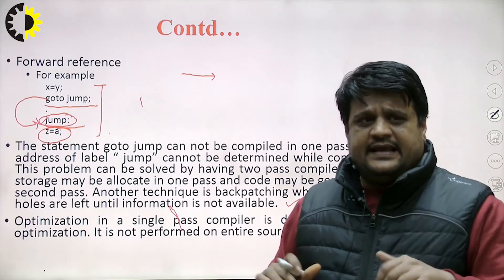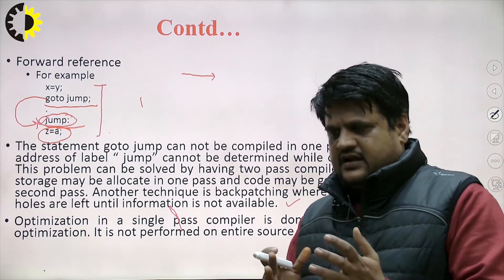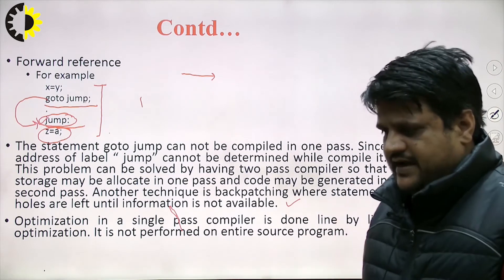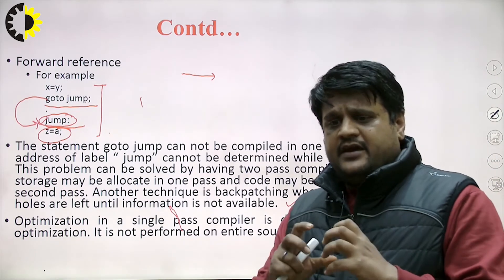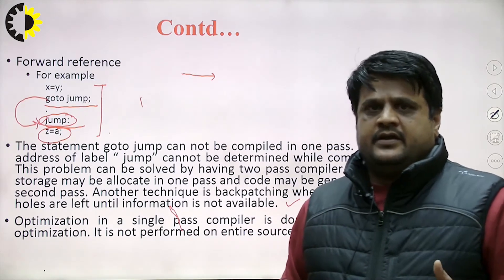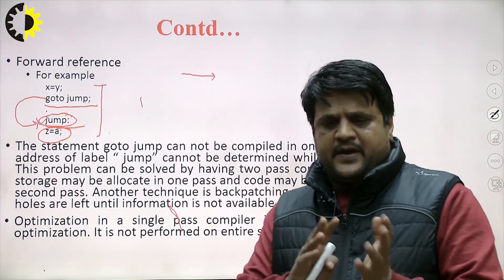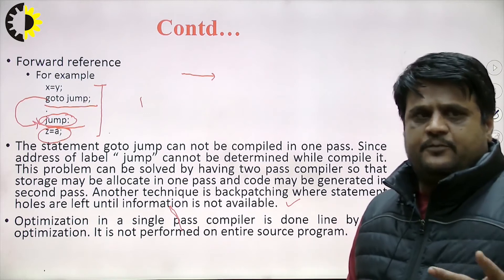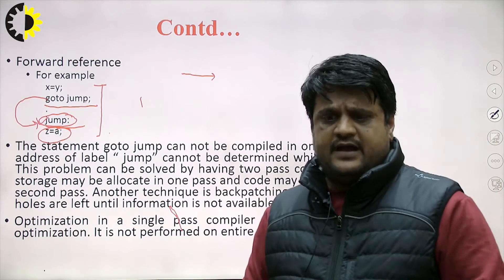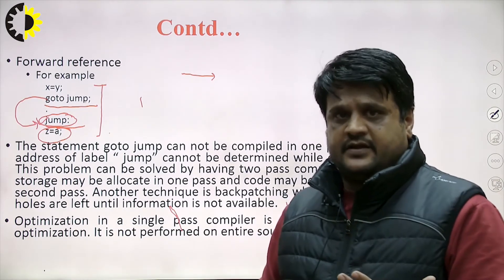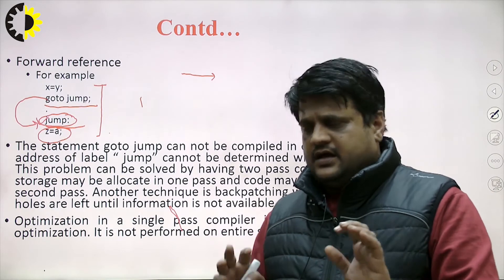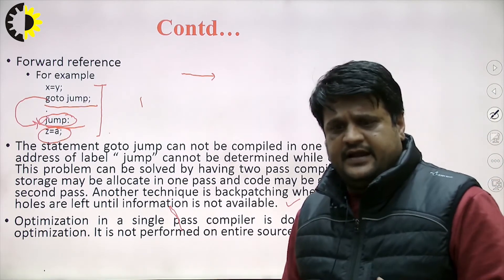In the case of a single-pass compiler, optimization is done line by line and is not performed on the entire source program. This is also a big drawback of a single-pass compiler — whenever the complete program is not available, optimization cannot be performed in a better way. In a single-pass compiler we can only perform optimization line by line, which has a limited scope. If the entire program is available, then optimization is much better.